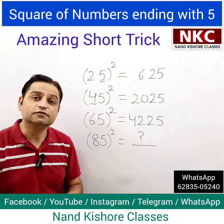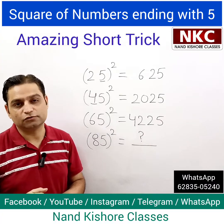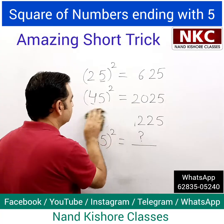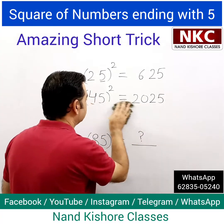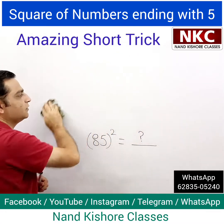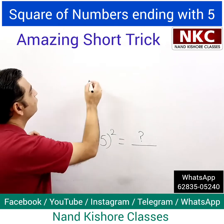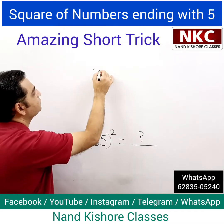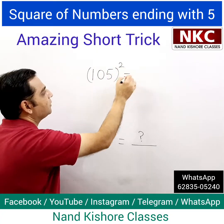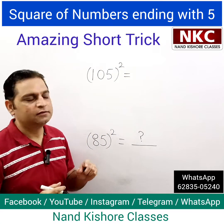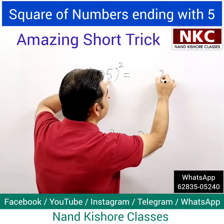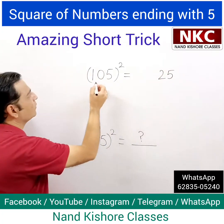I am going to show you one example. By that time, do 85 squared and write its answer. See, I am taking a three-digit number now: 105. You can apply the same rule here. 5 squared is 25 — write it as it is.